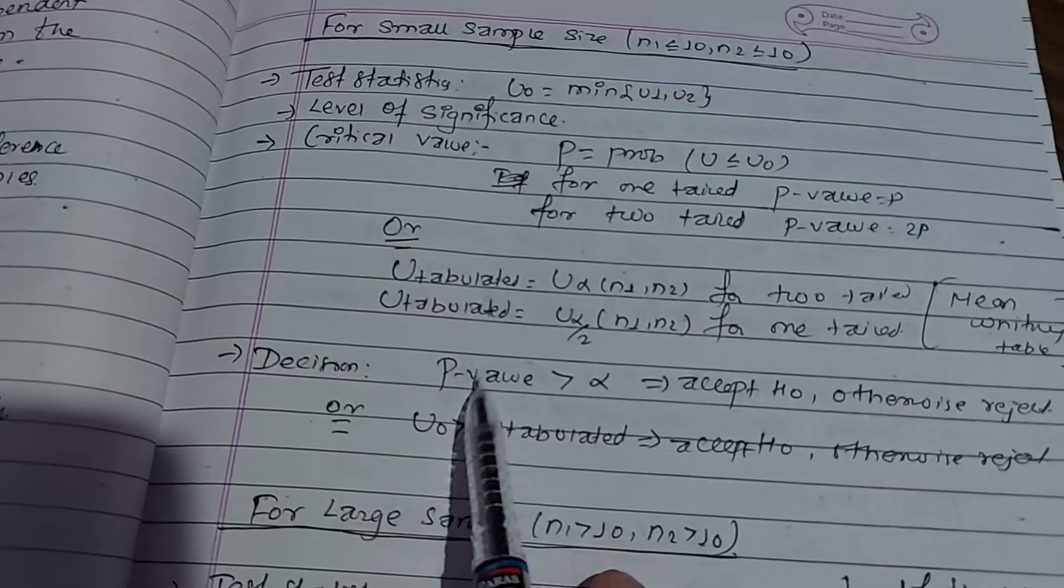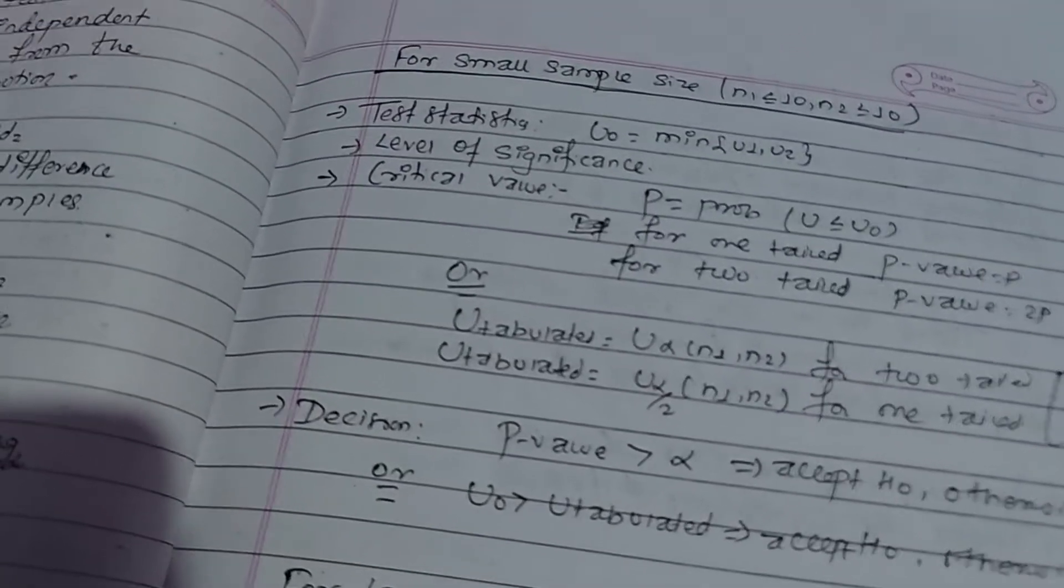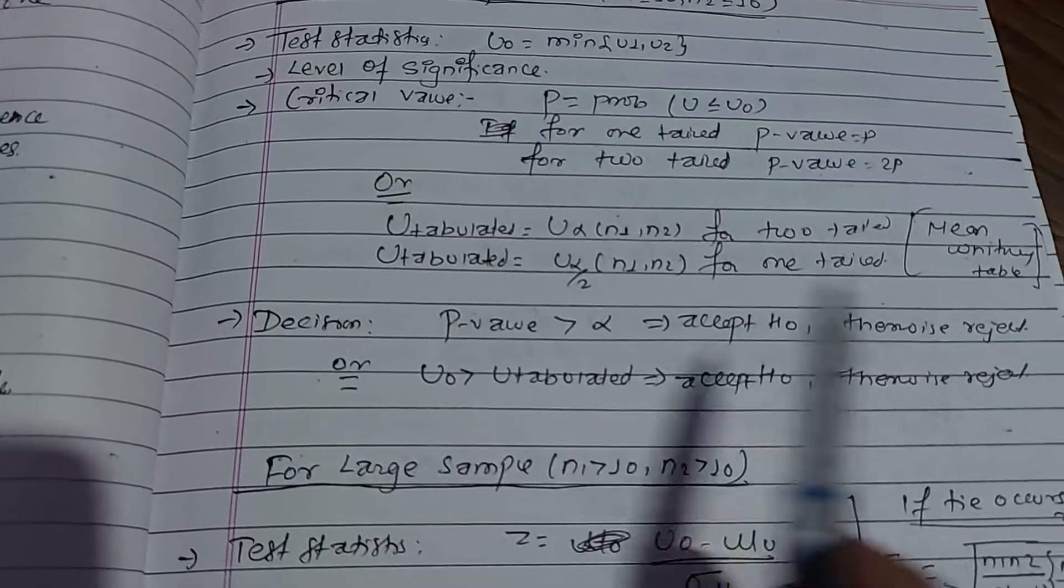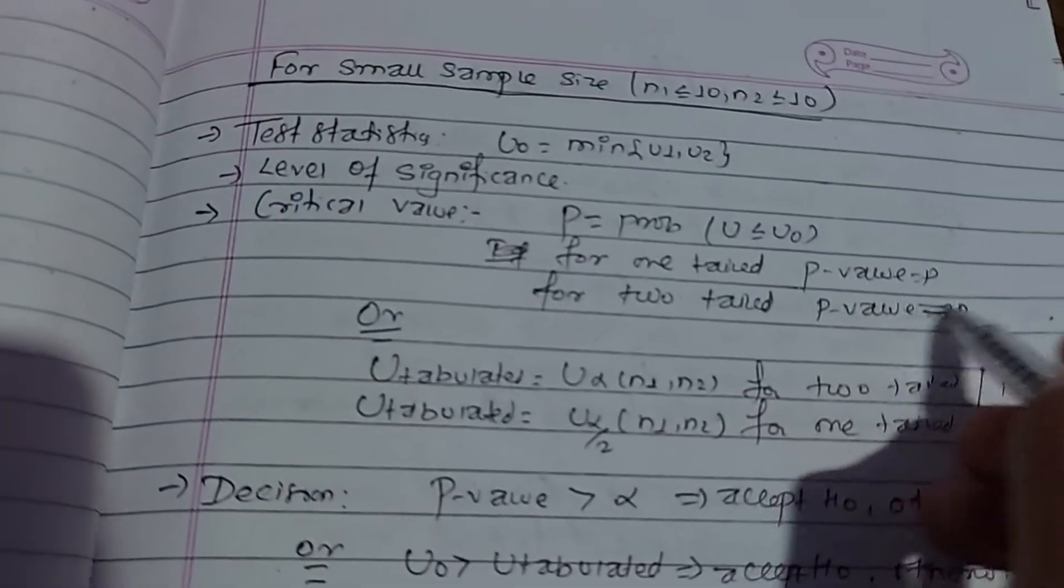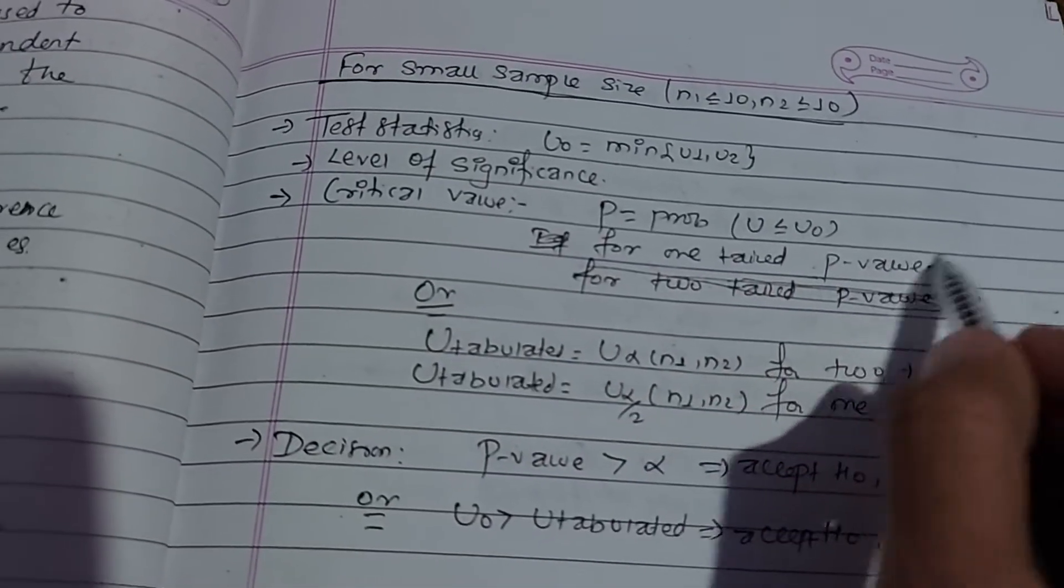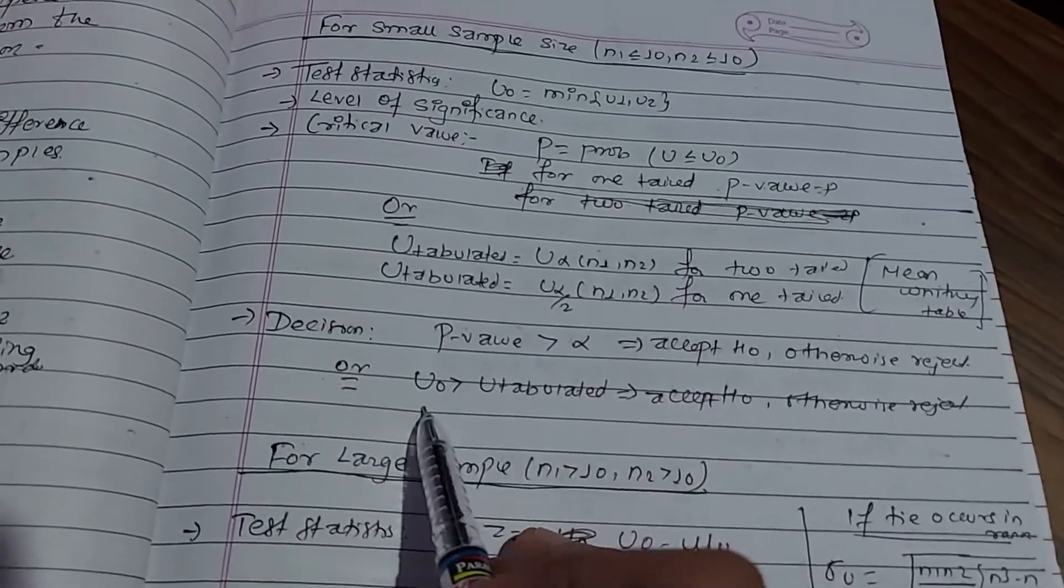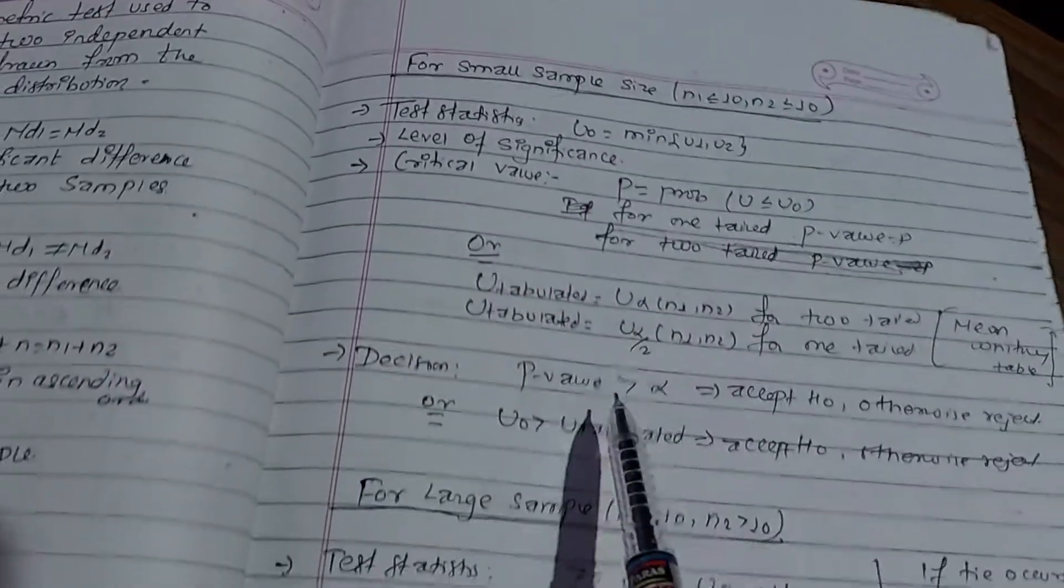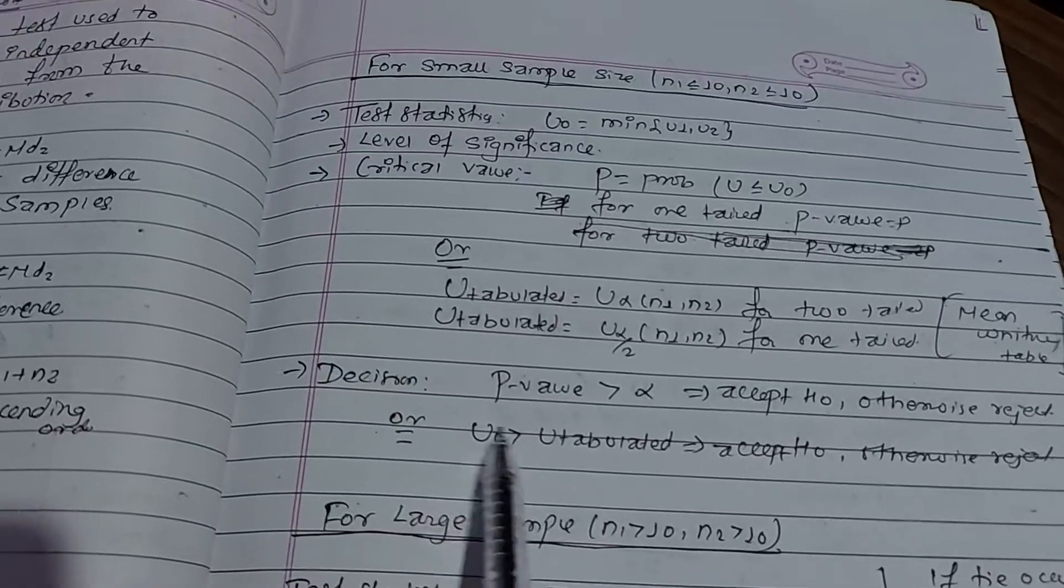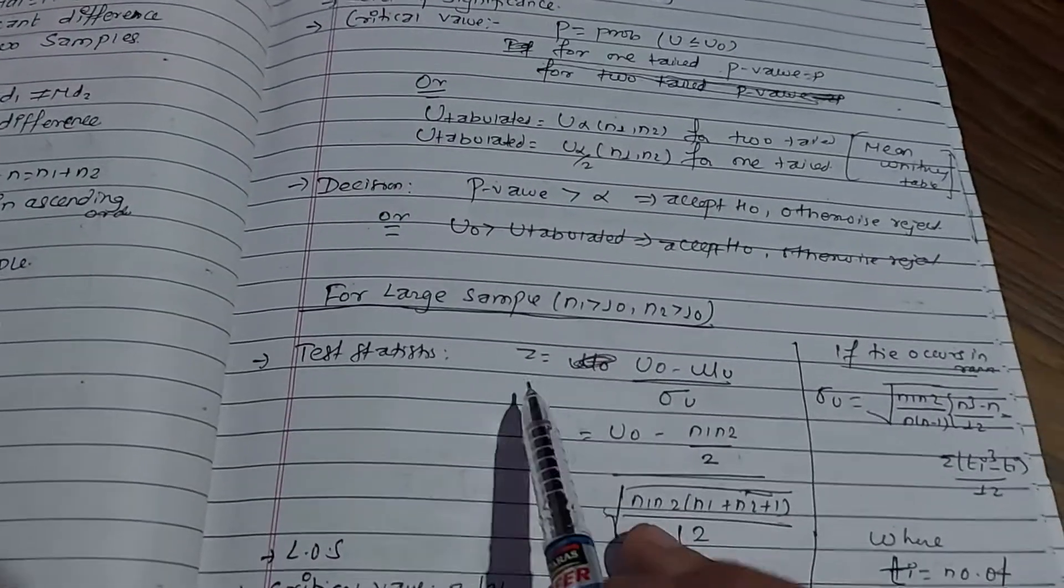Alternatively, you can use tabulated values. Compare your calculated test statistic with the critical value from the table. If the calculated value is greater than the tabulated value, you reject the null hypothesis. This is especially useful for small sample sizes.